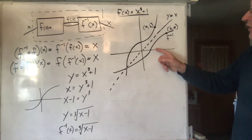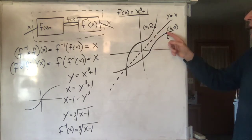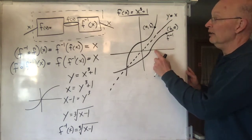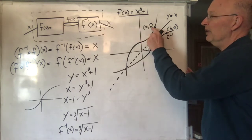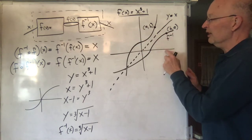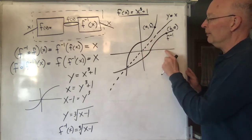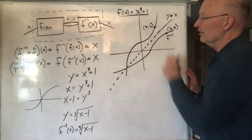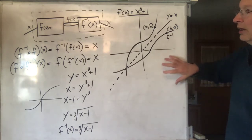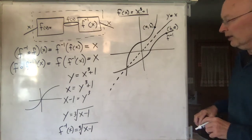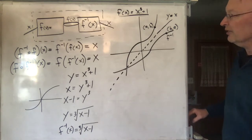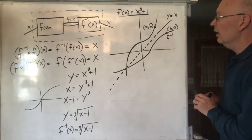They undo each other. If F sends A to B, then F inverse sends B back to A. You find B on the X-axis, and it sends it back to A again. So that's the relationship between a function and its inverse — they're symmetric over the line Y equals X. Since it flips over that line, not every function is going to have an inverse.